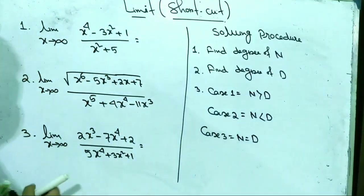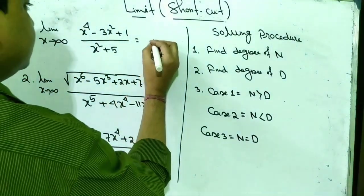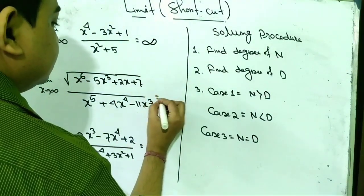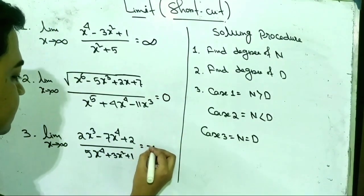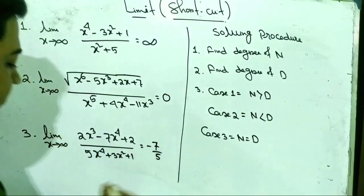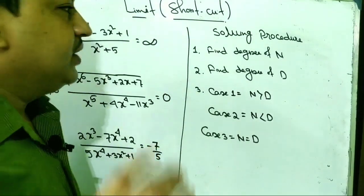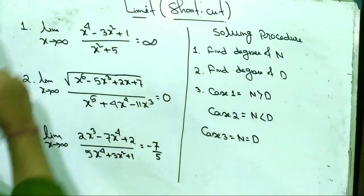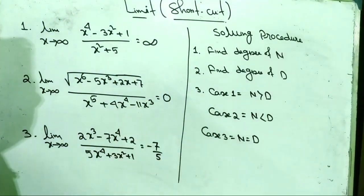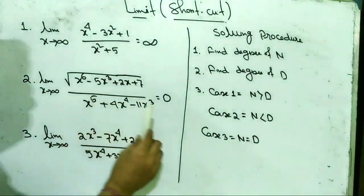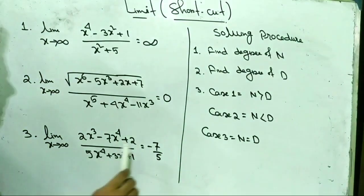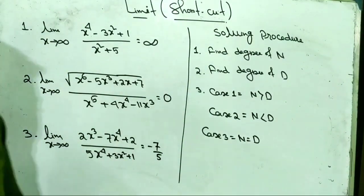The first problem's answer is infinity, the second problem's answer is 0, and the third problem's answer is minus 7 by 5.